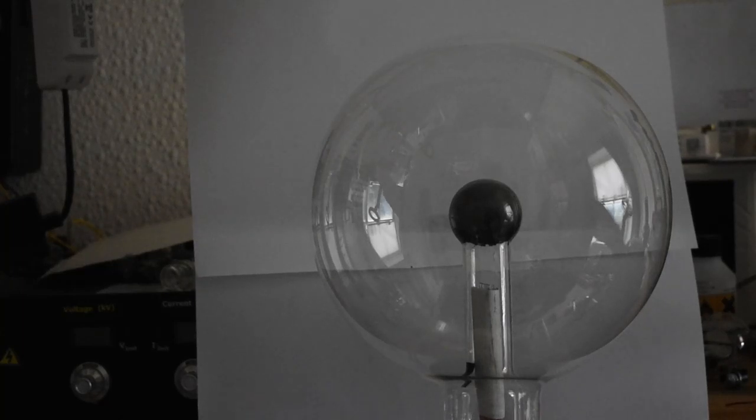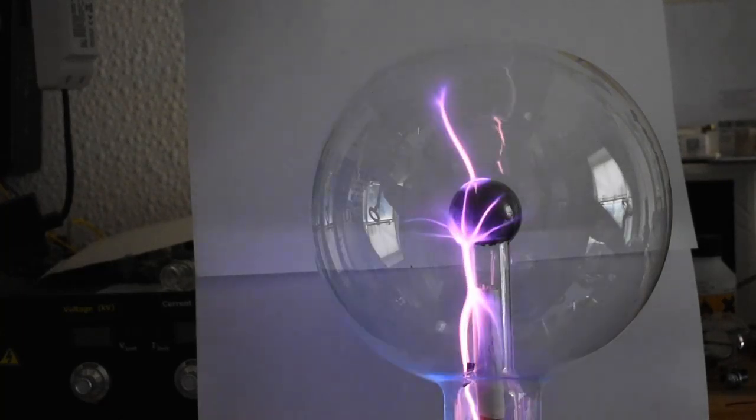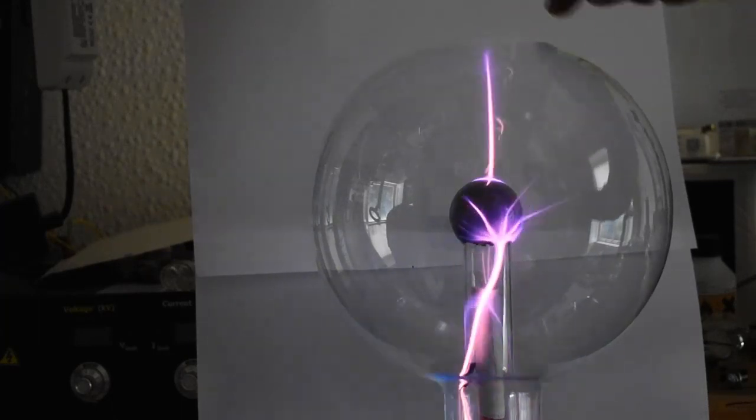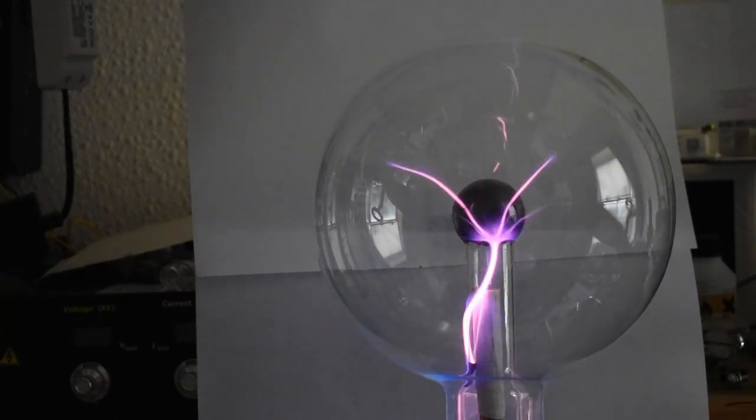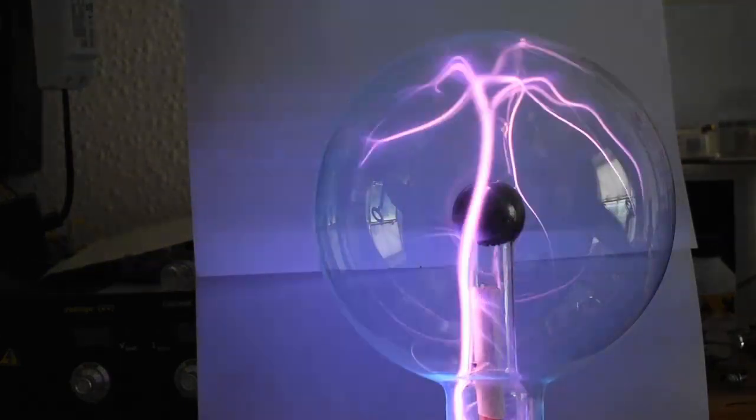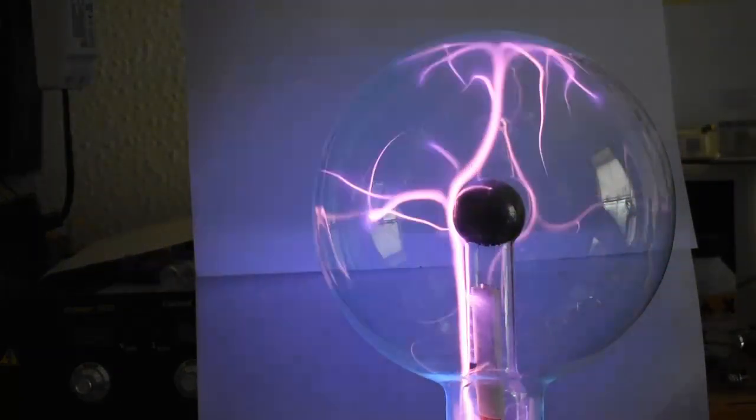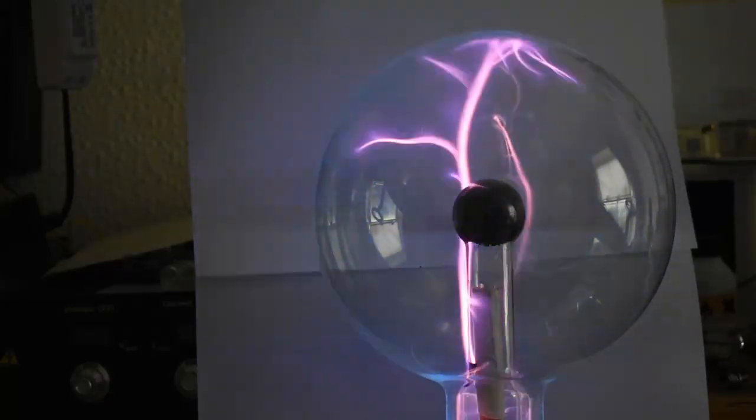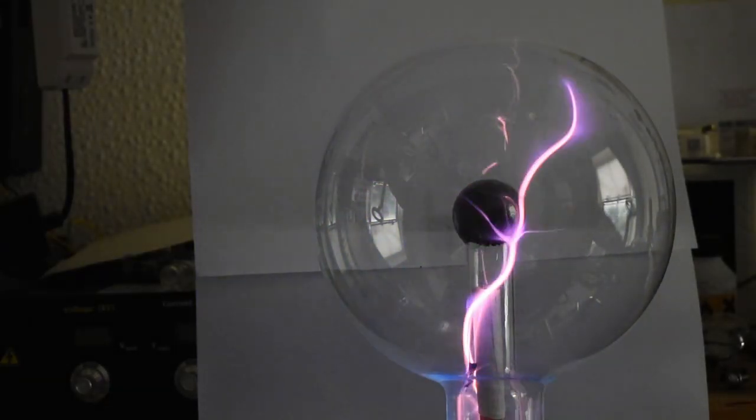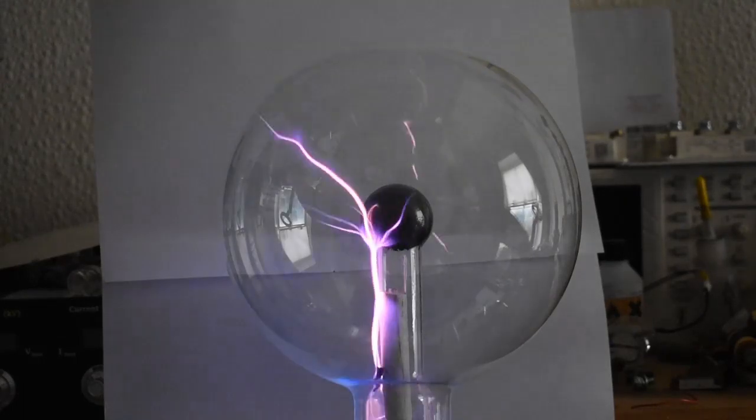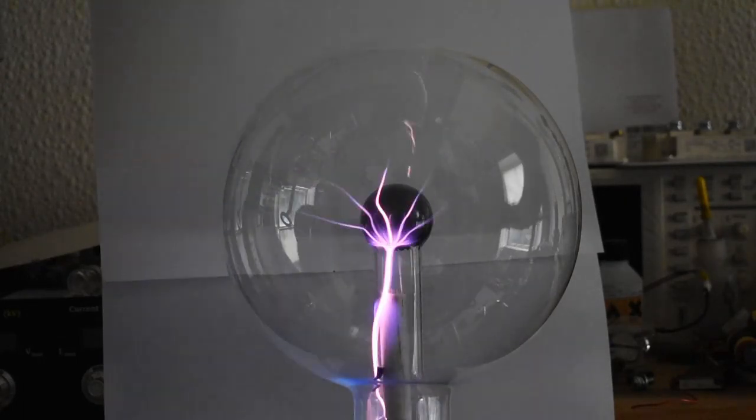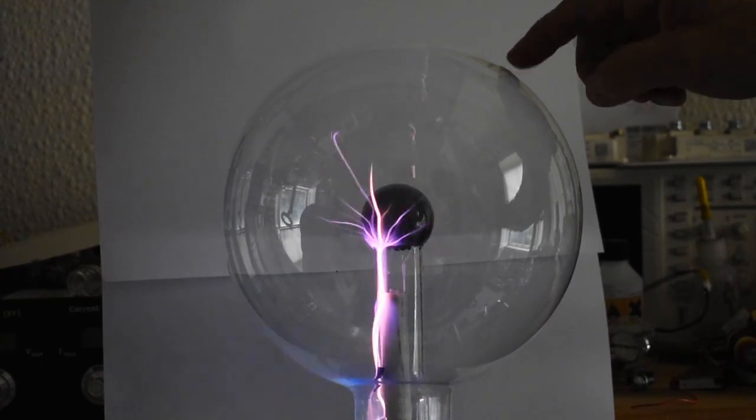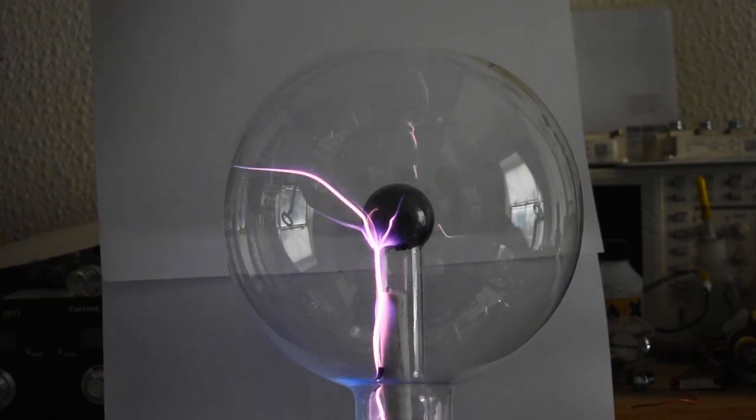I've added quite a bit of argon gas now and if I turn this up you can see we're back to quite sparky big long streamers. Quite fat though. And the color's completely changed. Maybe add a little bit more into it yet. Okay, it's quite a reasonable pressure now and you can see we're really getting very, very thin, sharp arcs again.